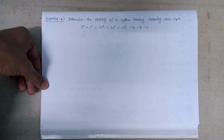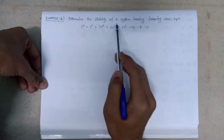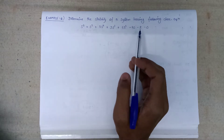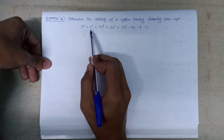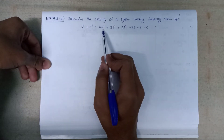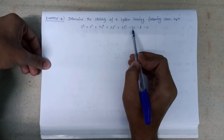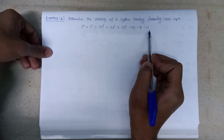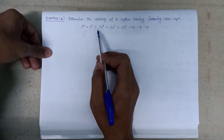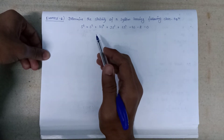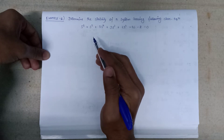Welcome. In this lecture we are going to discuss example number six: determine the stability of a system having the following characteristic equation: s⁶ + s⁵ + 5s⁴ + 3s³ + 2s² - 4s - 8 = 0. We need to check the stability, so we will first form the Routh array and count the number of sign changes, then predict whether the system is stable or not.